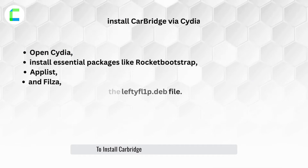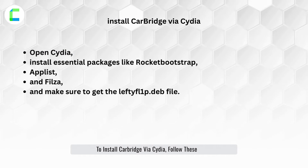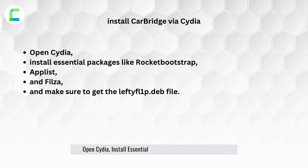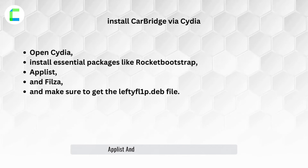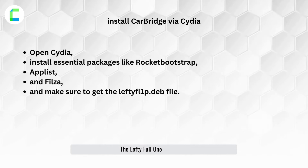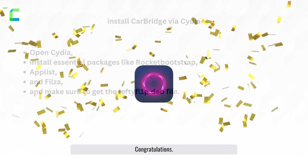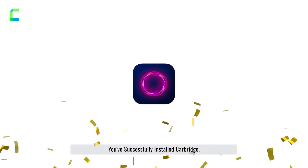To install Carbridge via Cydia, follow these steps: open Cydia, install essential packages like Rocket Bootstrap, AppList, and Filza, and make sure to get the lefty-full 1p.deb file. Congratulations — you've successfully installed Carbridge.